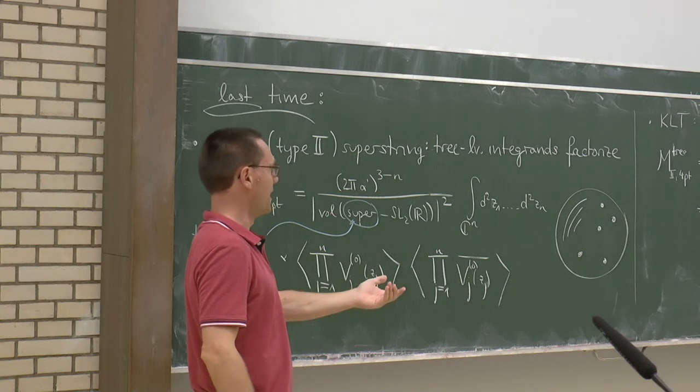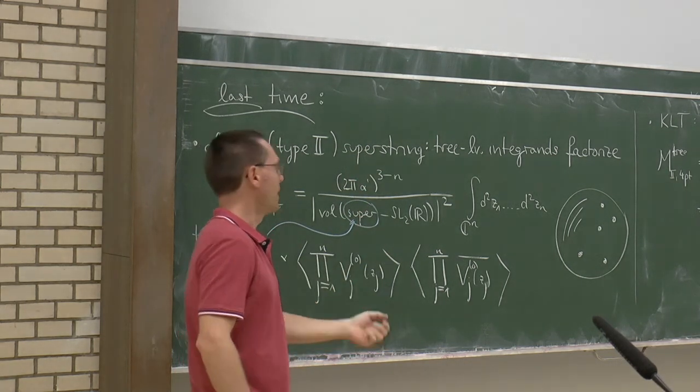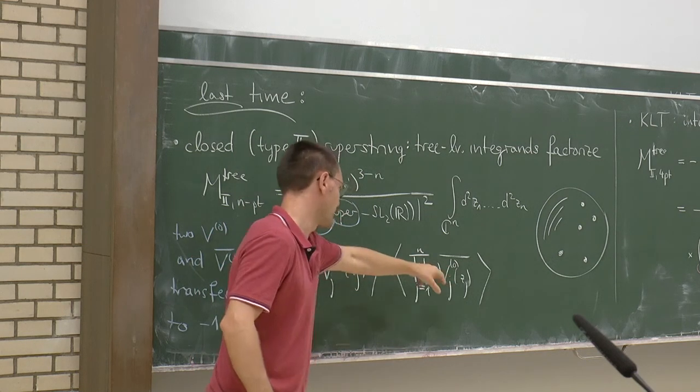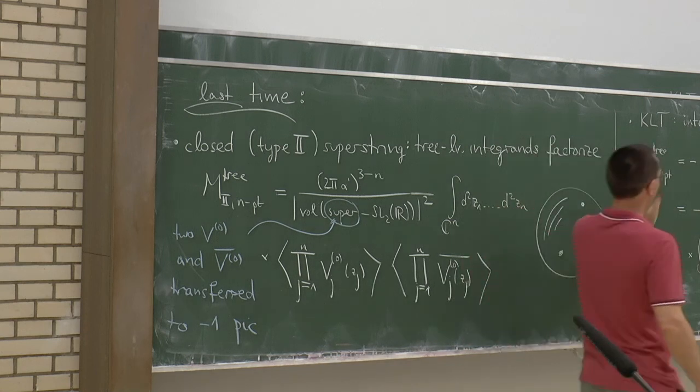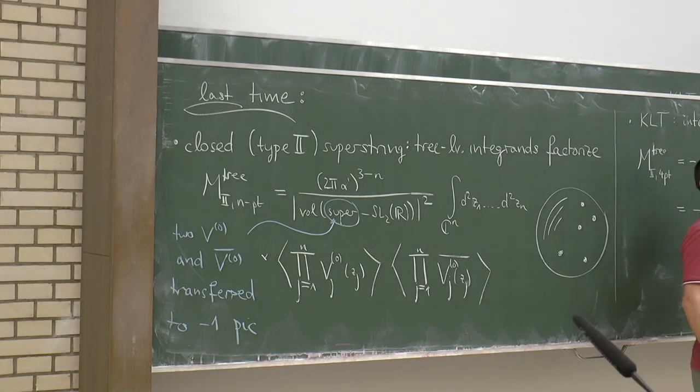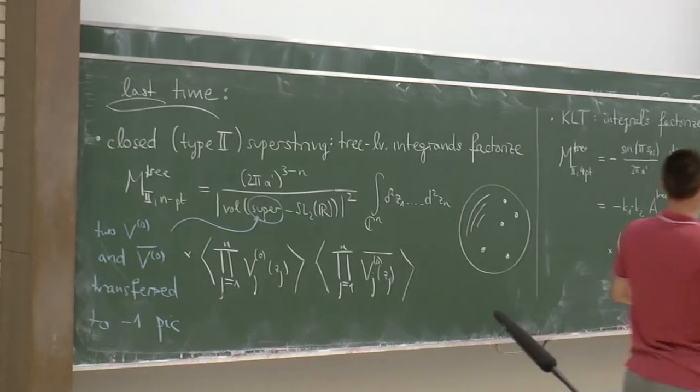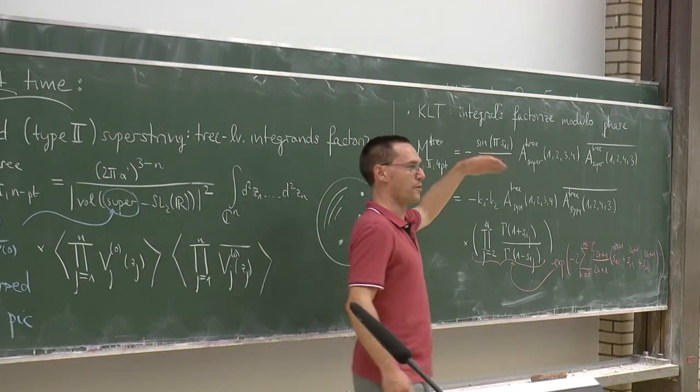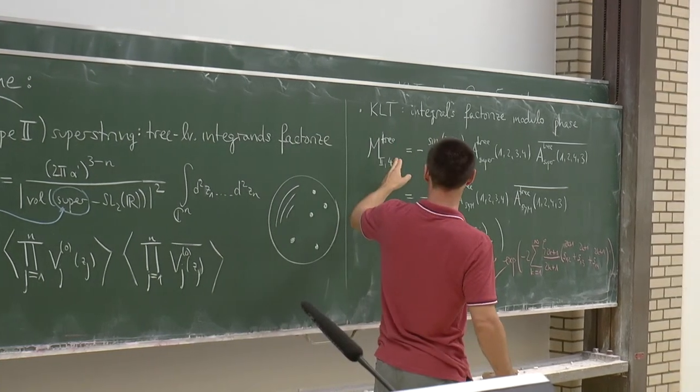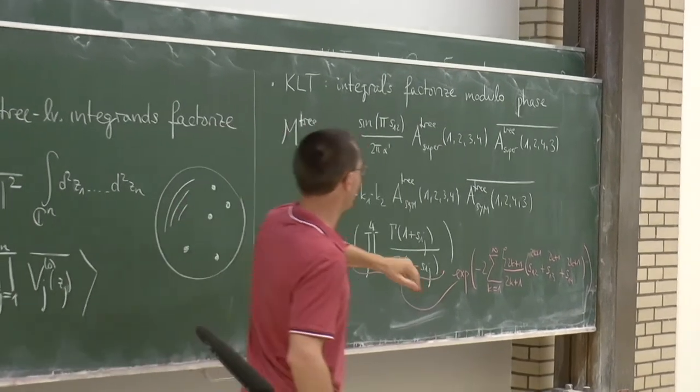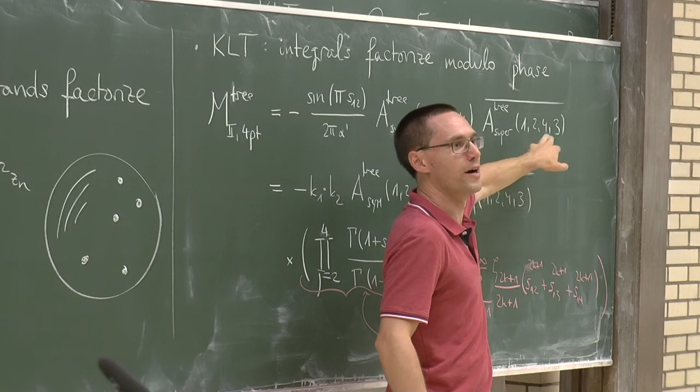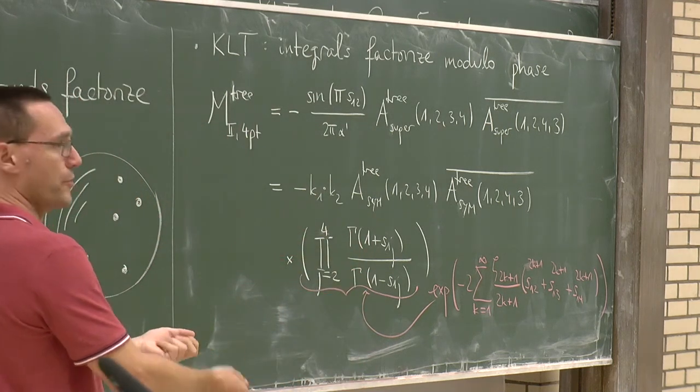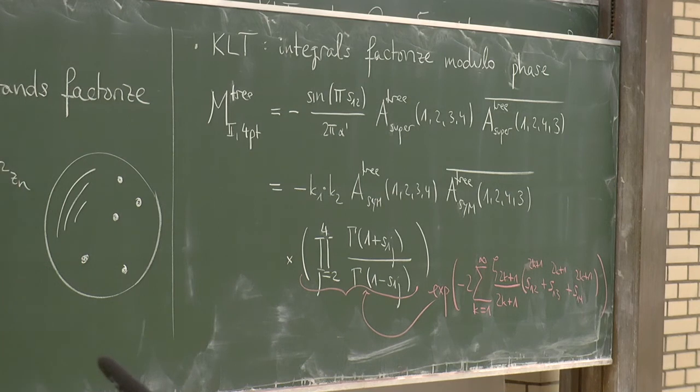So, you just compute the open string correlator separately and insert it here. Step two is, does the factorization carry over to the integrals after doing these integrals of punctures on a sphere? At the integral level, factorization holds in a slightly weaker form. Factorization only holds modulo phases. And here is a very concrete manifestation of this modulo phase.